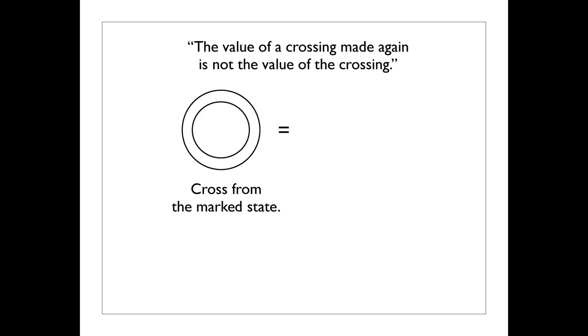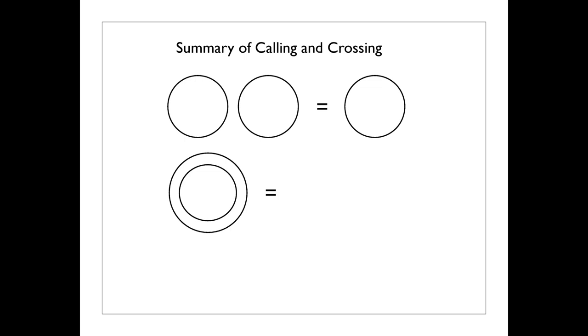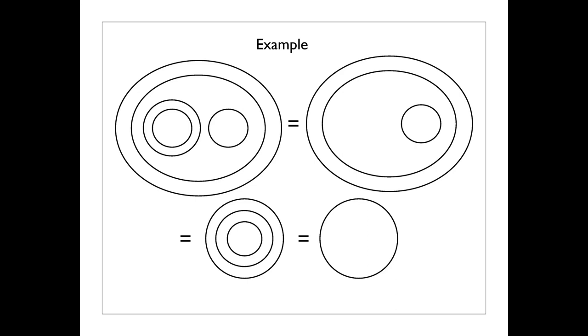And so this equation, which looks like one identical is equal to another, has become interpreted as dynamical on the left and in the form of naming on the right. And they are compatible with one another in the formalism that we are evolving. And then I have cross from the marked state is unmarked. And if I write that literally, I have that two concentric circles could cancel one another to nothing. The value of the crossing made again is not the value of the crossing. And that's the second part of the formalism. Two circles that are concentric to one another can cancel.